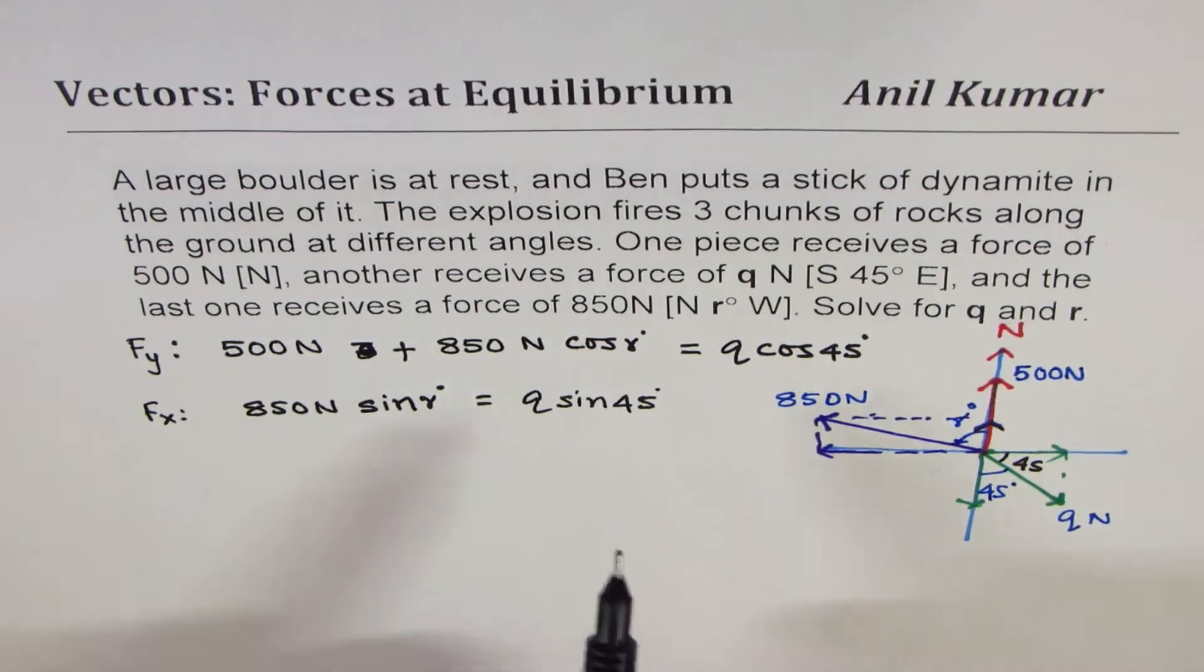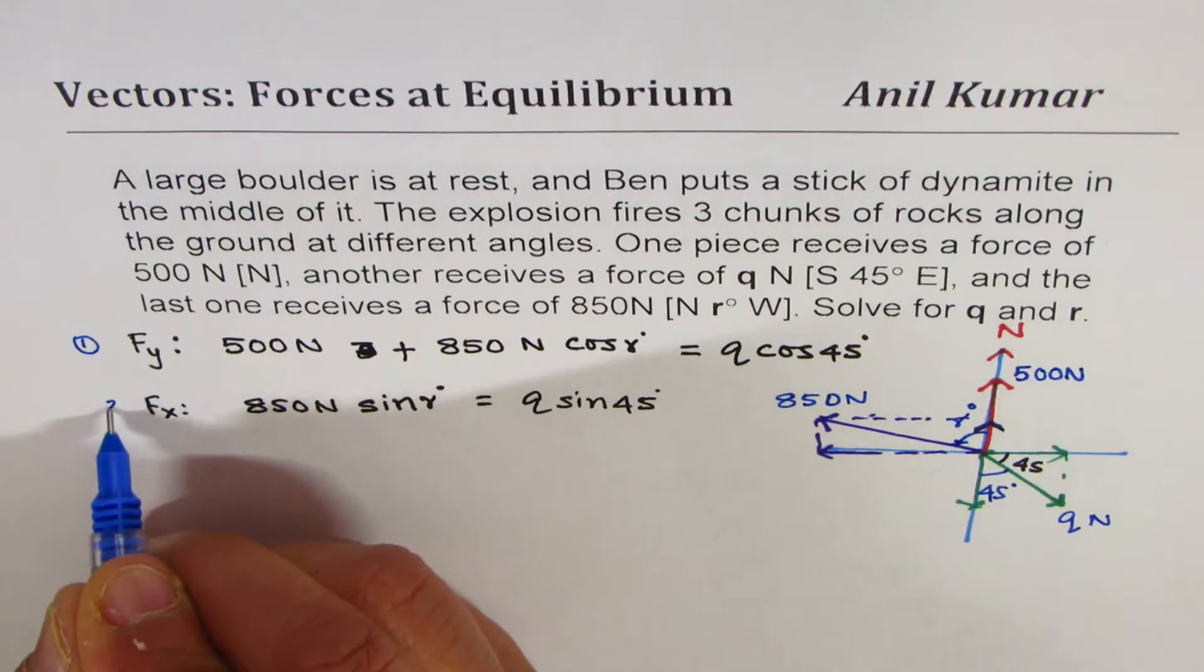Since we are taking this as 45, let me write q, opposite to 45 as sine 45. We know cos 45 and sine 45 are 1 over square root 2, so we could always replace them. And rewrite our equations, let's call them equations 1 and 2.